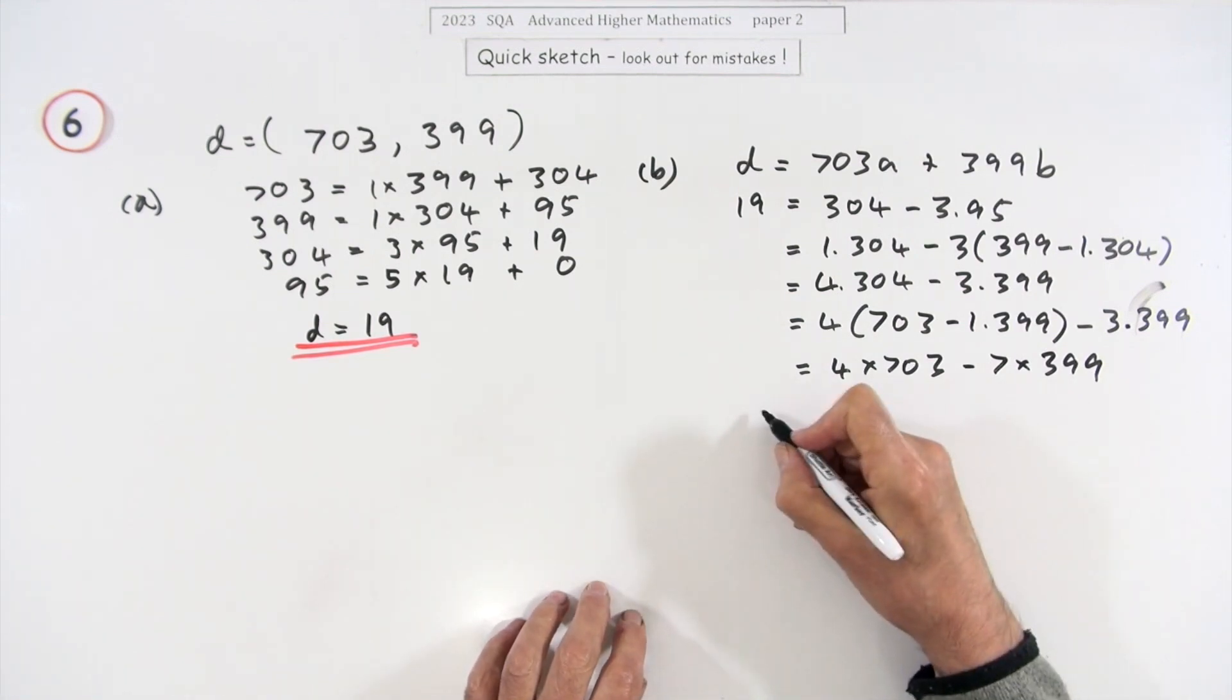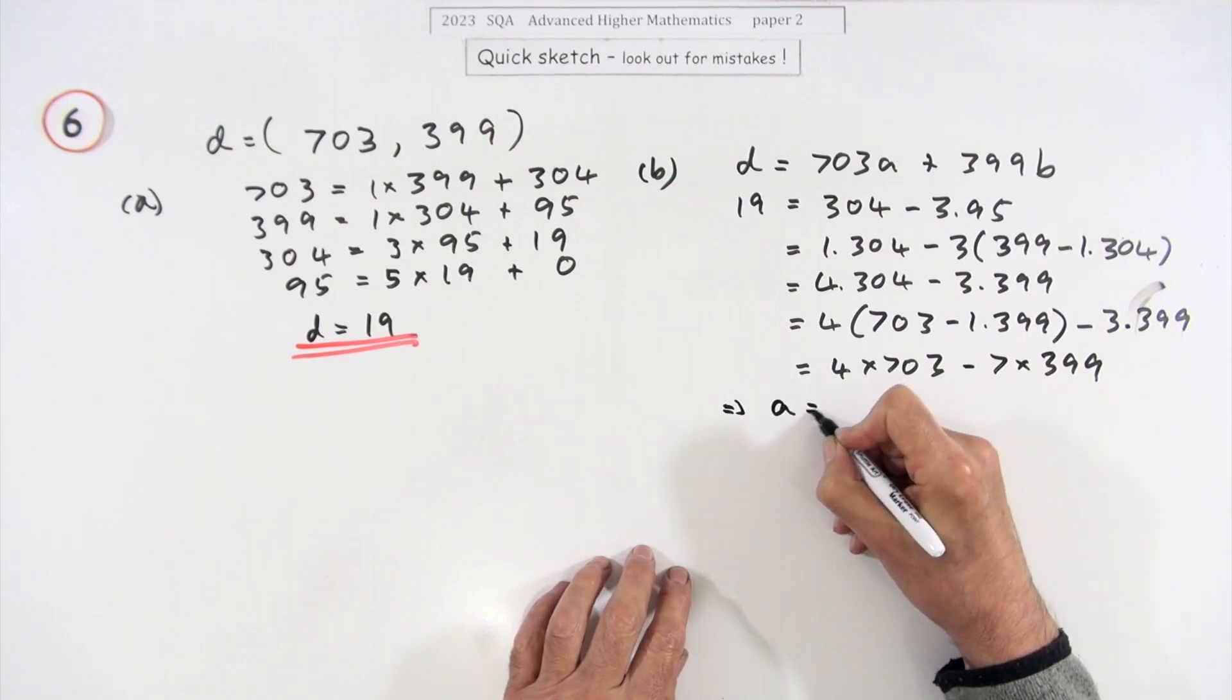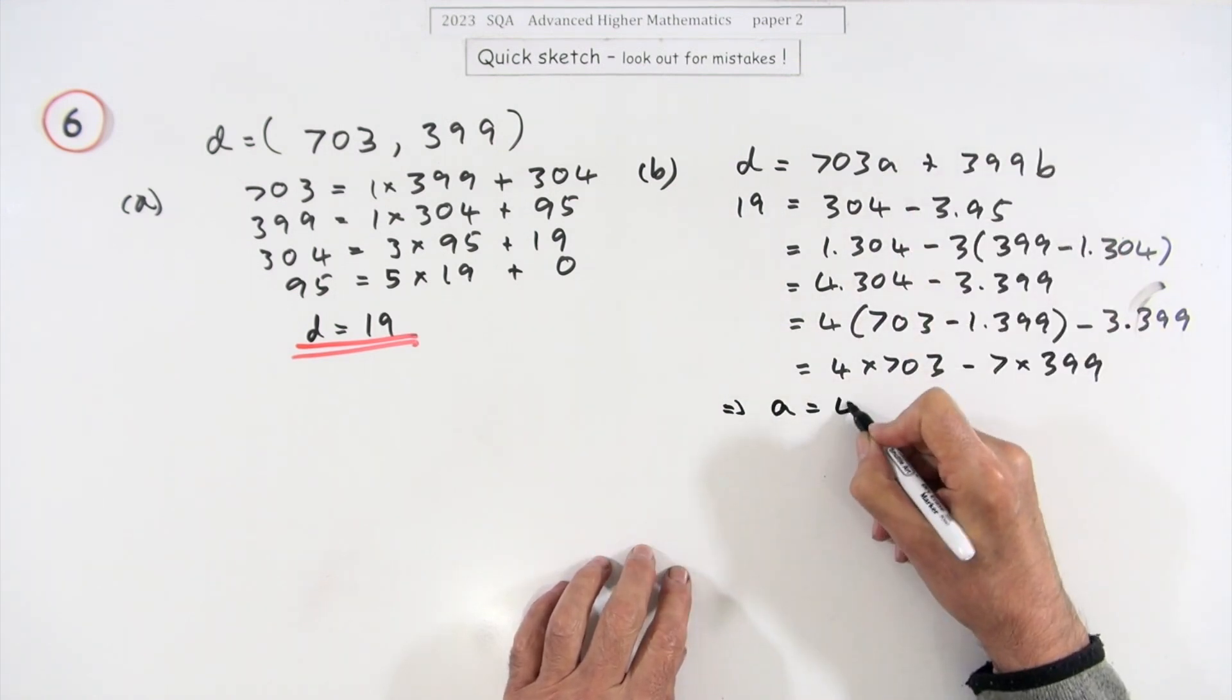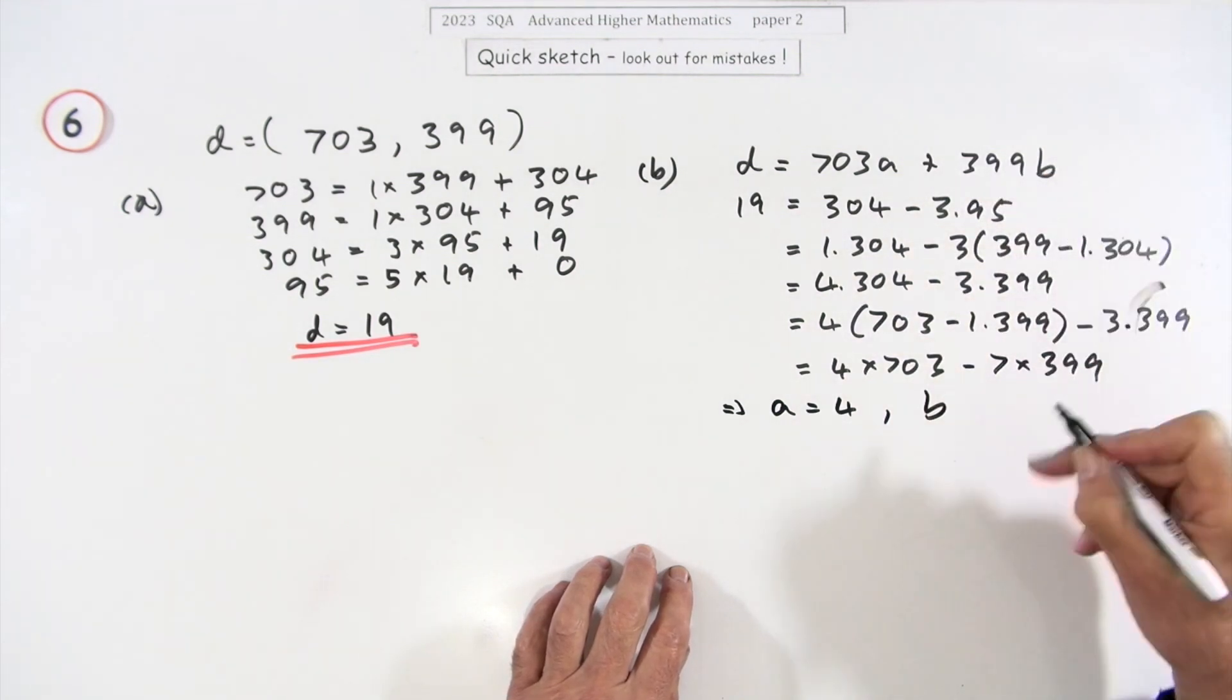So I think we need to finish up by saying what a and b were, which means that a is four and b is negative seven.